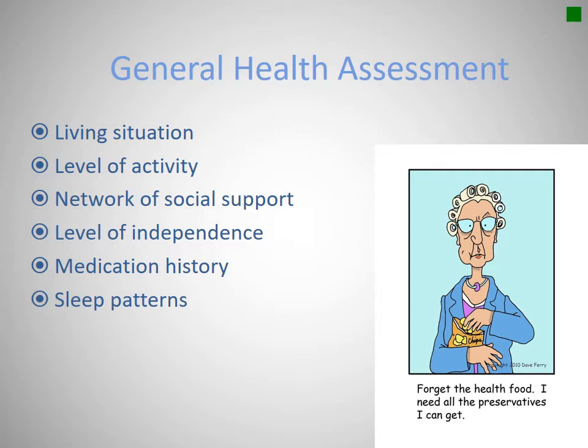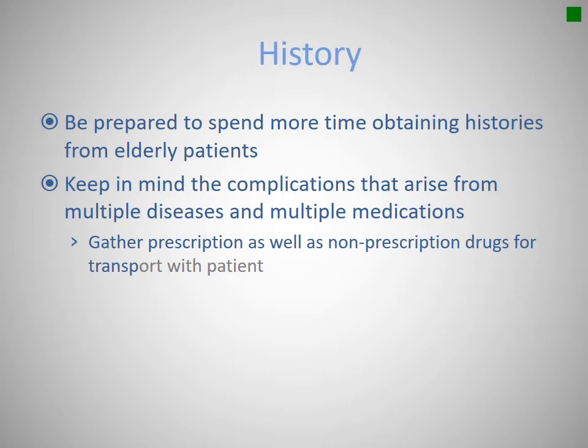Gathering a history of present illness and past medical history from elderly patients can be difficult. Sometimes chief complaints are vague, and sometimes they have a very high pain tolerance — what might be severe pain to a younger person is just a little bit to them. They may have lengthy medical histories and lengthy histories of present illness. Keep in mind that some elderly patients believe that because they take a medicine for something, they no longer have that condition. Make sure you ask about history and what medications they take.